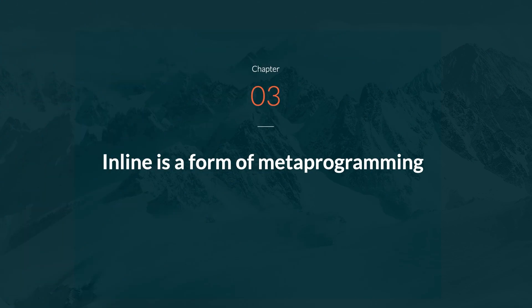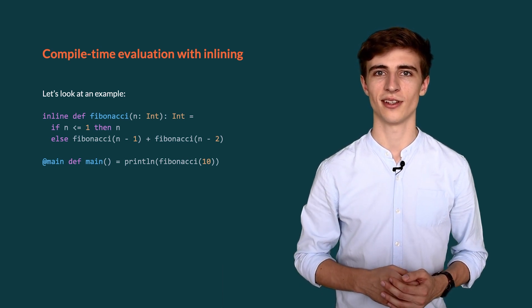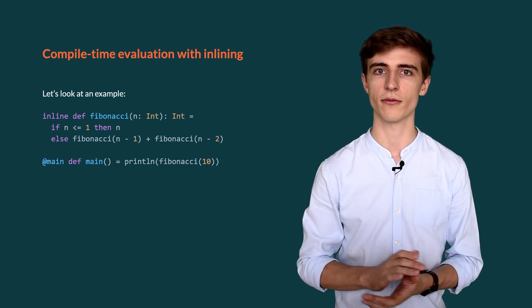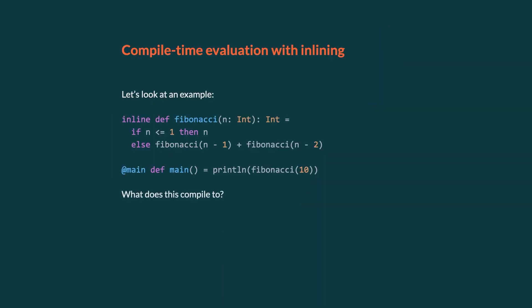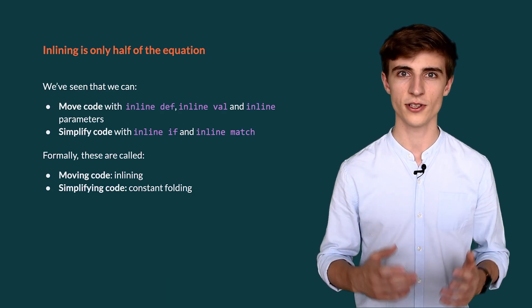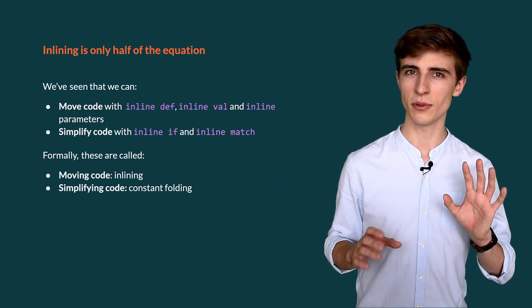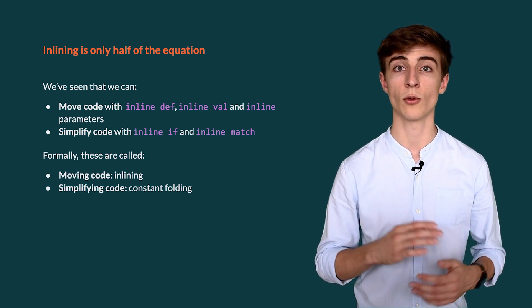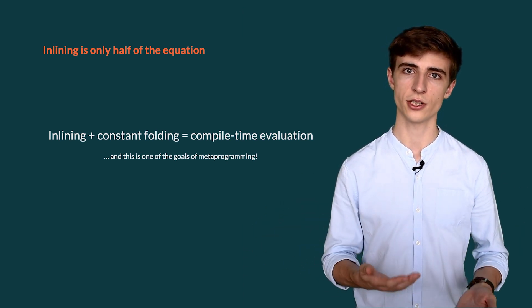Now that we've seen all the ways you can use the new inline keyword, you might be wondering: how is this related to metaprogramming? Here's a simple implementation of the Fibonacci sequence derived from the mathematical formulation for it. In the main method we call Fibonacci of 10. The answer is that it compiles to println(55) — so the compiler evaluated the function call at compile time. This is because inline defs plus inline vals plus inline parameters give us inlining, and inline ifs plus inline matches give us constant folding. And inlining plus constant folding gives us compile time evaluation, which is one of the goals of metaprogramming.